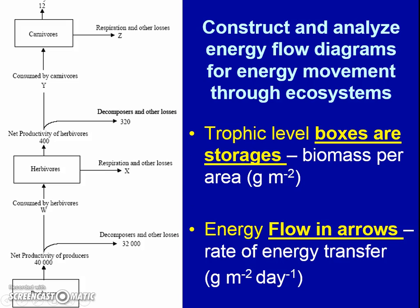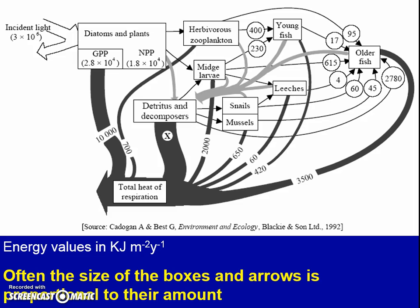We're going to be constructing and analyzing examples of these in class. Sometimes we show different trophic levels as boxes showing their biomass, and energy flow is always shown by arrows. All these diagrams are kind of different but have the same big idea — energy moving in one direction. Notice that arrows are different sizes and boxes are different sizes based on how much energy they're holding: bigger arrow means bigger amount of energy. We'll practice in class — I'm really proud of you. This was a hard one. Bye!